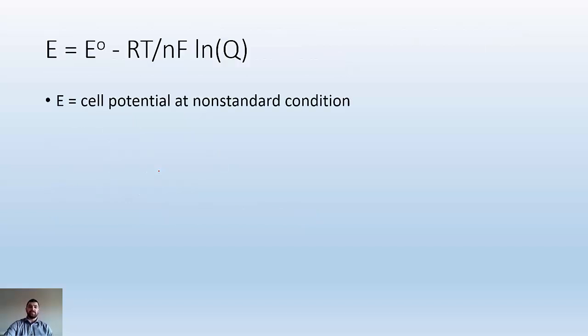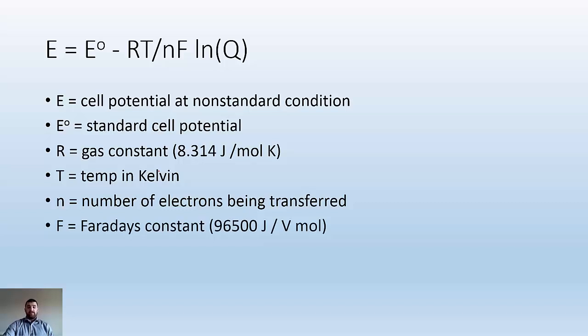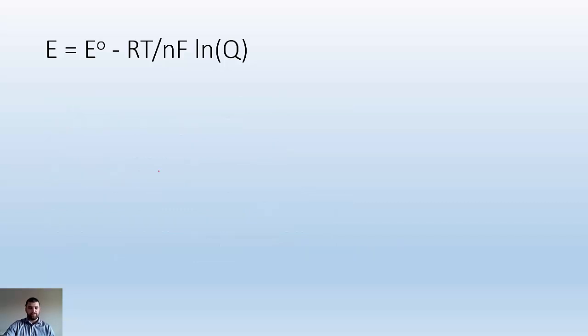E is the cell potential at non-standard conditions. E naught is the standard cell potential. R is the gas constant, 8.314 joules per mol Kelvin. T is the temperature in Kelvin. N is the number of electrons being transferred. F is Faraday's constant, and Q is the equilibrium expression with values plugged in, so it doesn't have to be at equilibrium.